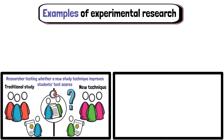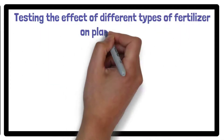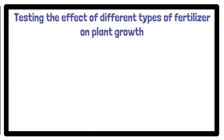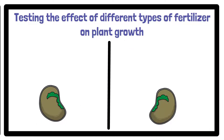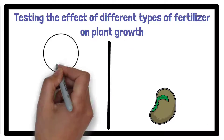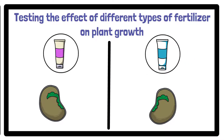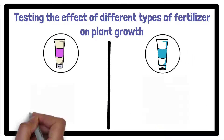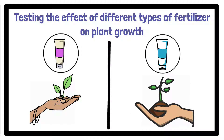Another example could involve testing the effect of different types of fertiliser on plant growth. The researcher could plant identical seeds in similar soil, but use a different fertiliser for each group of plants. By measuring the height and health of the plants over time,